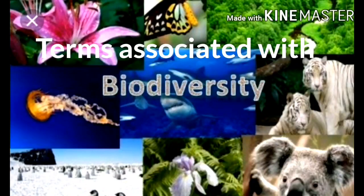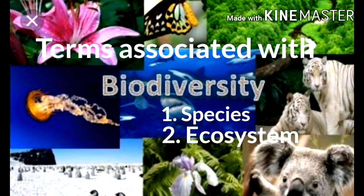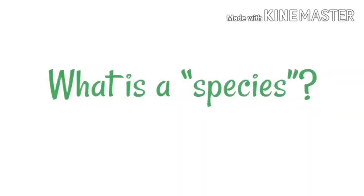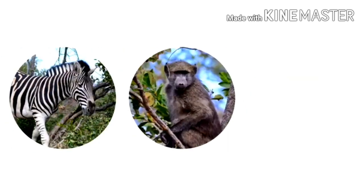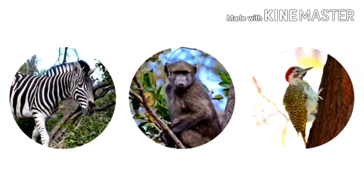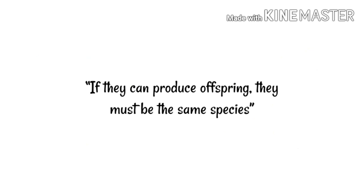Let us learn various terms associated with biodiversity: species, ecosystem and habitat. What is a species? It is quite confusing. Whenever we talk about species, we say these are the different varieties of organisms. Like here, we have zebra, monkey and a woodpecker. All three are different organisms. If they can produce offspring, they must be the same species, right?